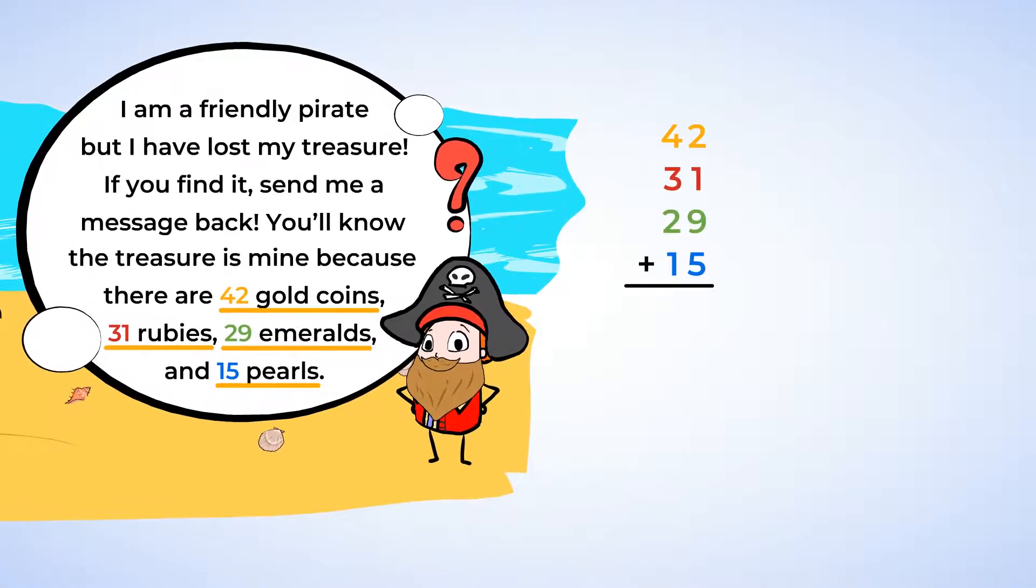Here is our equation. Remember how we made some easy tens before by finding tens facts in the ones place? Well, we can do that again. Here, I see a 9 and a 1. So, we know that will be an extra 10 that we need to add. Let's make a note of that by adding a little 1 on top of the tens column.